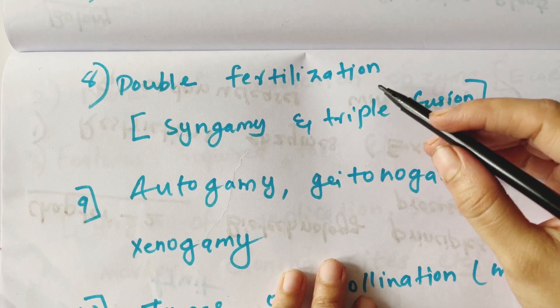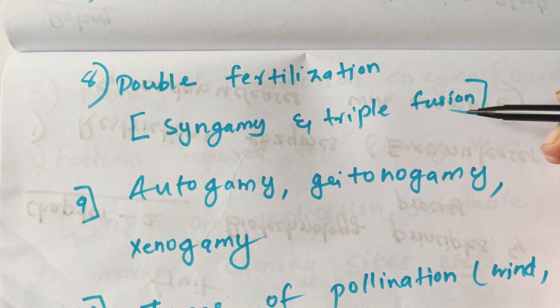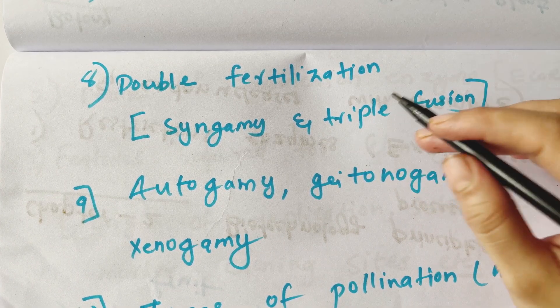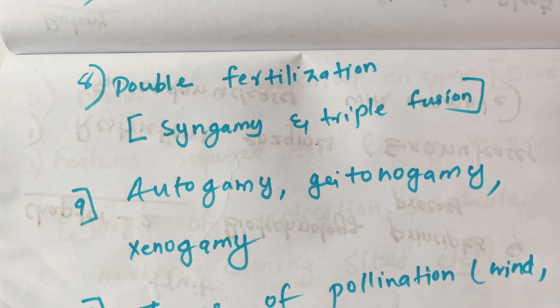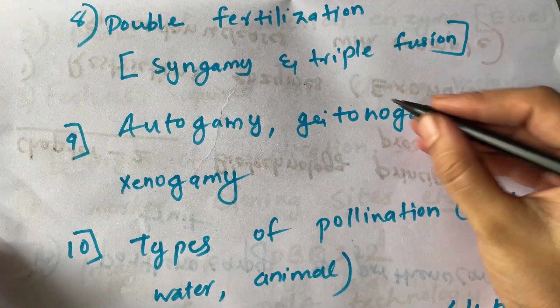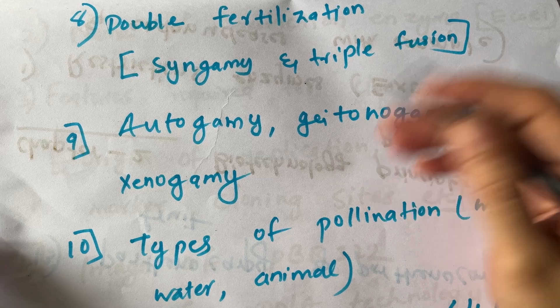Double Fertilization — syngamy and triple fusion — are the key sub-topics under Double Fertilization. Then, autogamy, geitonogamy, and xenogamy.